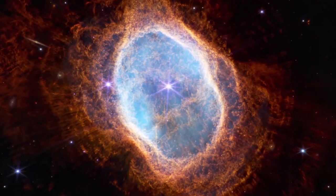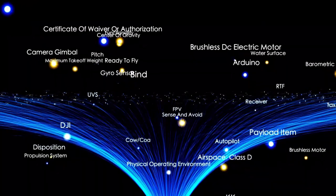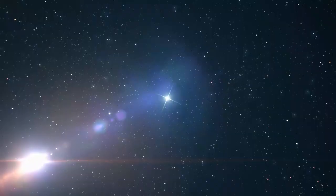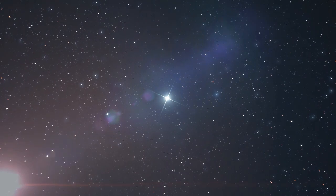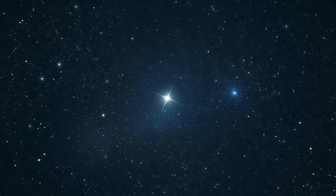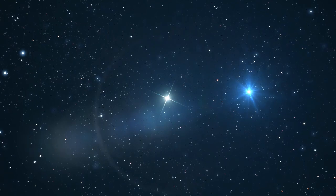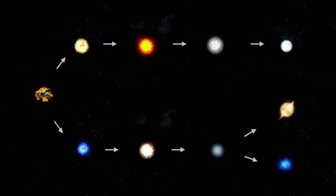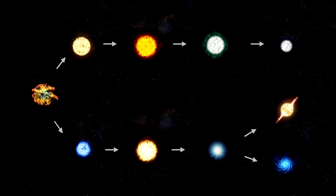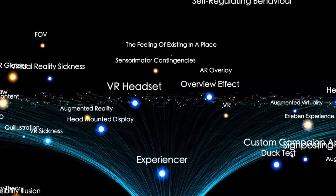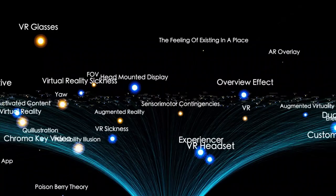This event has also reignited questions about the internal mechanics of red supergiants. These stars are extremely difficult to model because of their immense scale and the turbulent conditions within them. Betelgeuse has long puzzled scientists with its irregular light patterns, and this sudden brightening adds another layer of complexity.